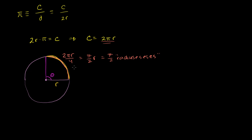You could say this arc length is π/2 radiuses — or more precisely, π/2 radii. So theta here is π/2 radians. When you're measuring angles in radians, you're really saying that angle is subtended by an arc that has a length of how many radii. This arc length is π/2 radii, and it subtends an angle of π/2 radians.